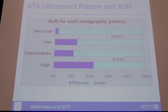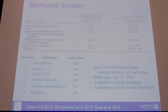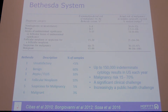For very low risk nodules, a biopsy really is icing on the cake and not strictly necessary. For low, intermediate, and high risk patterns there's an increasing risk of malignancy, and those are the ones we target for biopsy. A Bethesda 6 is a malignant diagnosis 99% of the time in our hands; Bethesda 5 is more than 85%, and Bethesda 2 benign has a very low chance of cancer — we can safely observe those patients.